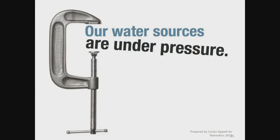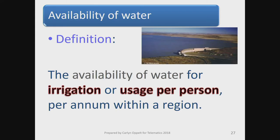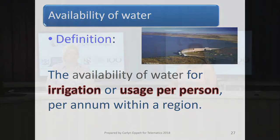Our water sources are under immense pressure — it's time for us to give water a second thought. The definition of availability of water is: availability for irrigation or usage per person, per annum, within a region. In the Western Cape we've cut down to daily use of no less than 50 litres per person. The availability of water must be such that the available water is also healthy and clean — not with parasites or disease-causing germs.